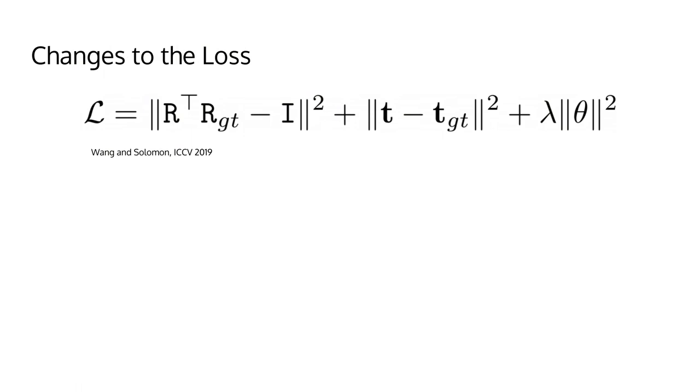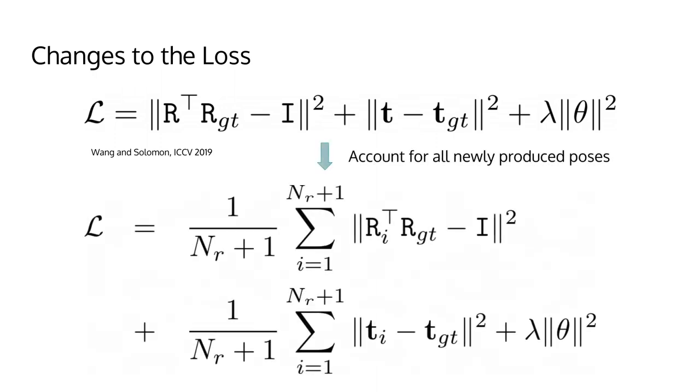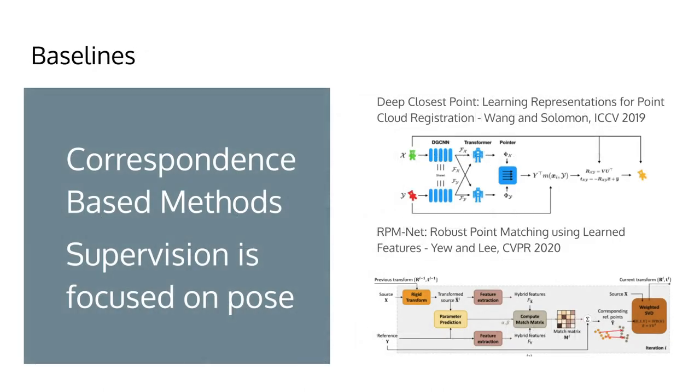With newly produced poses at every iteration, we need to incorporate them into the loss. As an example, we present up top how Deep Closest Point supervises its training. After adding our layer, we integrate the new poses by averaging the contribution of each, as supported by our ablation studies. We validated our discoveries with two correspondence-based point cloud registration networks that focus on pose supervision, namely Deep Closest Point and RPM-Net.